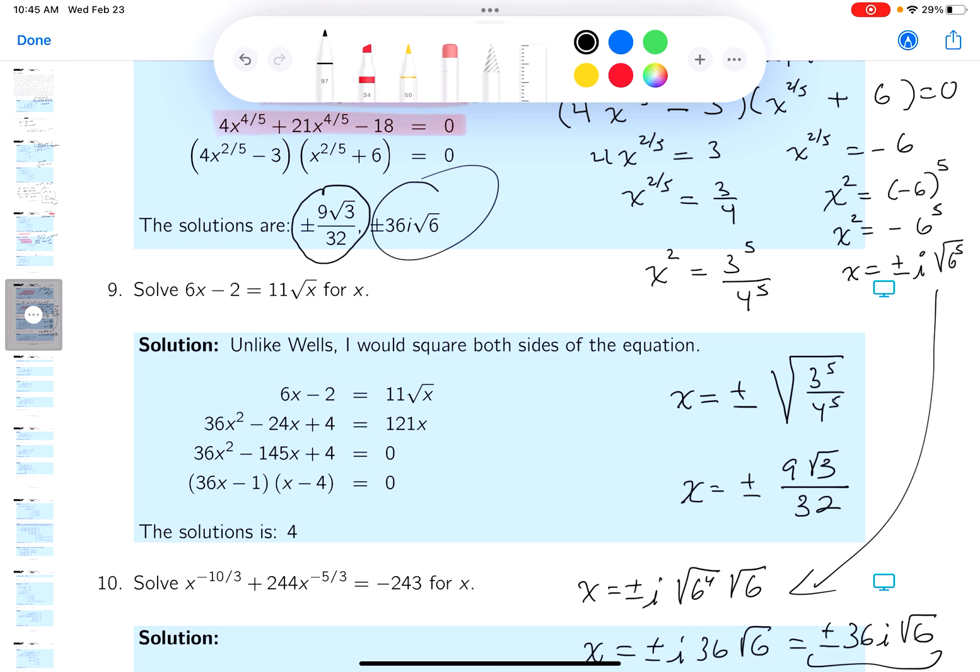By the way, conventions, a lot of people like the convention where the i is at the very end of it. I like to put it before the root, by the way. But again, a lot of it, you might look at an answer key somewhere and see 36 root 6, and then see an i right there. It's the same thing. Thank you.